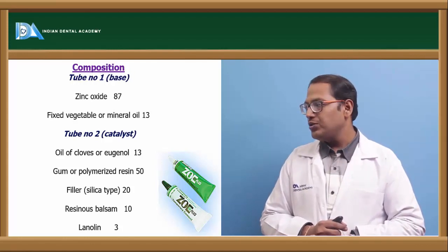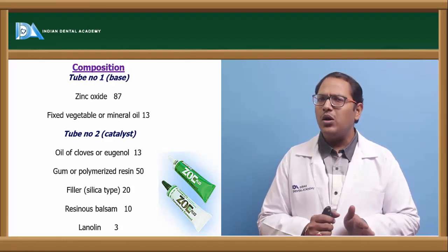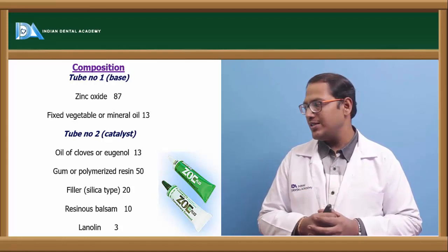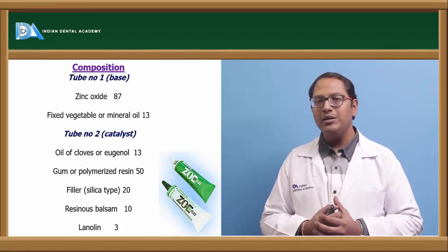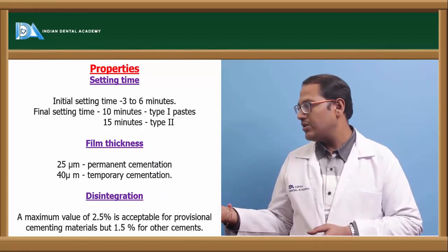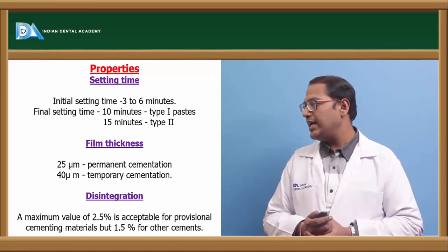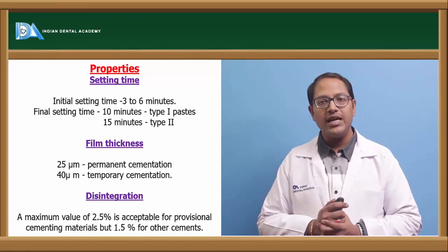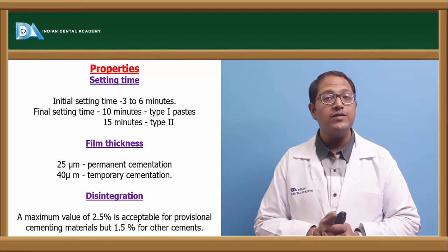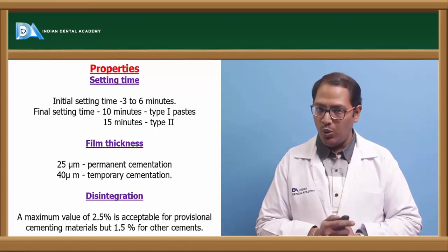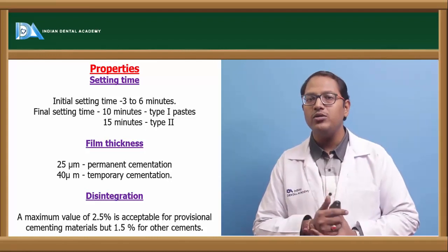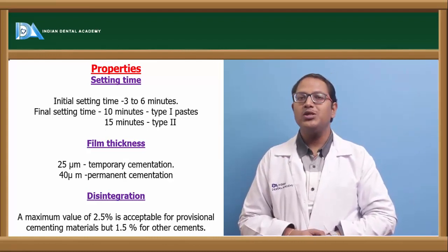ZOE composition: Tube 1 contains zinc oxide (87%) and mineral oil. Tube 2 contains eugenol — note that oil of cloves is more acidic than eugenol; eugenol is the refined form and is better. The formulation includes 13% eugenol, gum or polymerized resin, 20% silica filler particles, and resinous balsam to increase viscosity. Film thickness for temporary restoration is 25 micrometers; for permanent restoration it goes up to 40 micrometers.